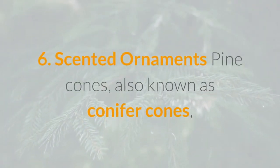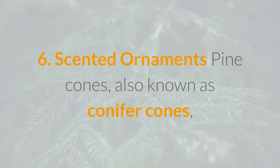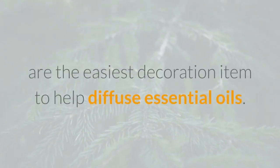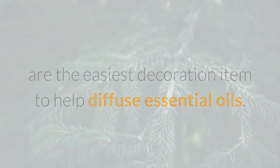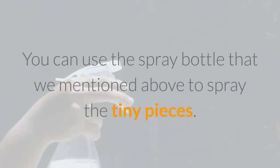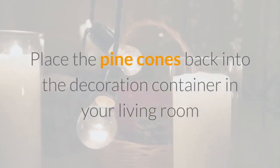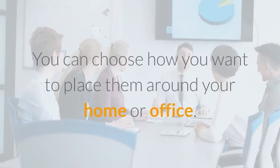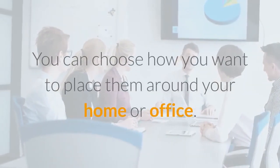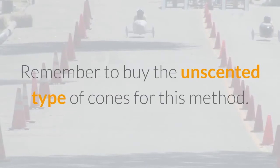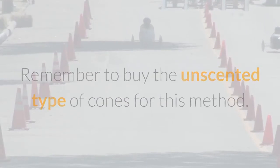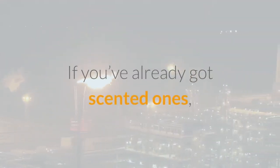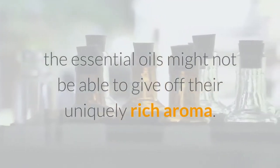Method 6: Scented ornaments. Pine cones — also known as conifer cones — are the easiest decoration item to help diffuse essential oils. Use the spray bottle from Method 5 to spray the tiny pieces, then place the pine cones back into a decoration container in your living room or hide them in a vase. Remember to buy the unscented type of cones — if you've already got scented ones, the essential oils might not be able to give off their uniquely rich aroma.